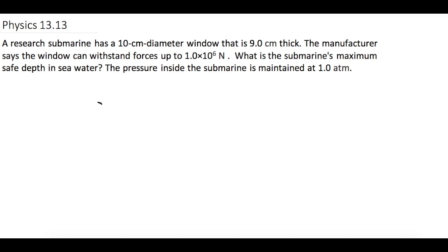So we have our window here. They tell us the diameter is equal to 10 centimeters. Put that in SI right away - we have 0.1 meters. They tell us this window is 9 centimeters thick. We'll say inside over here is 1 atmosphere, and we don't know what the pressure is out here.